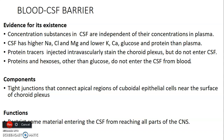What are the components of the blood-CSF barrier? Tight junctions are formed between the apical regions of the cuboidal epithelial cells near the surface of the choroid plexus. These cuboidal epithelial cells form very tight junctions between them, creating a barrier that prevents substances injected into blood from entering the CSF. The function of this barrier is to restrict substances within the blood from entering the CSF, thereby preventing them from reaching the brain or spinal cord.